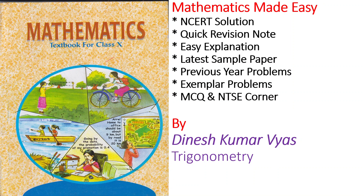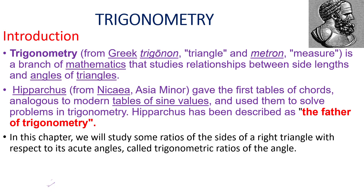Hello viewers, today we will discuss trigonometry — what is trigonometry and what are trigonometric ratios. The word trigonometry is derived from the Greek words 'trigon' and 'metron': trigon means triangle and metron means measure. It is a branch of mathematics that studies the relationship between the sides and angles of a triangle.